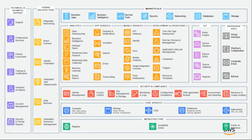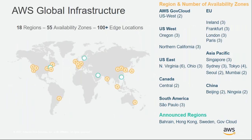Today, AWS has over 100 plus services ranging from compute, storage, network, databases, analytics, application services, deployment and management, artificial intelligence, IoT, mobile, security, hybrid, and enterprise architectures — all delivered just like an electricity grid. AWS has global infrastructure spanning 18 separate regions with 55 availability zones and over 100 plus edge locations. With one single AWS account, you can access all of these global regions and deploy infrastructure across multiple geographies.